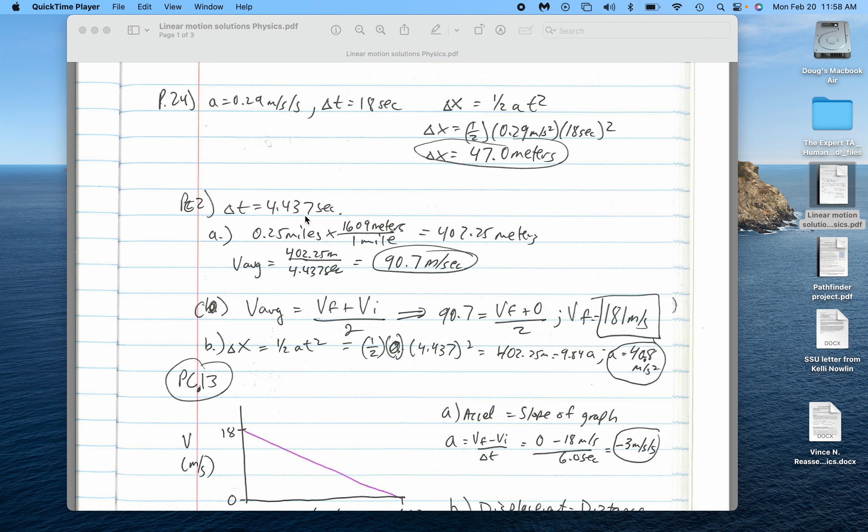You could have attacked this in multiple ways. Average velocity, first of all, I just got that the displacement is 402.25 meters divided by the time. That's 90.7 meters per second.